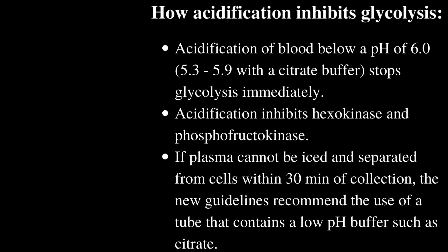How acidification inhibits glycolysis: acidification of blood below a pH of 6.0 stops glycolysis immediately. Acidification inhibits hexokinase and phosphofructokinase. If plasma cannot be iced and separated from cells within 30 minutes of collection, the new guidelines recommend the use of a tube that contains a low pH buffer, such as citrate.